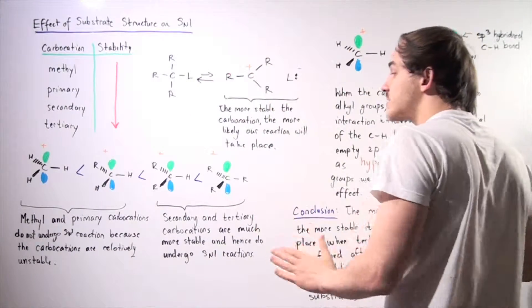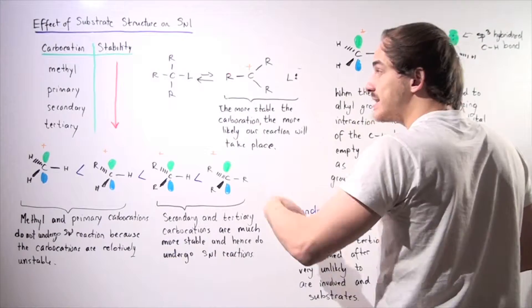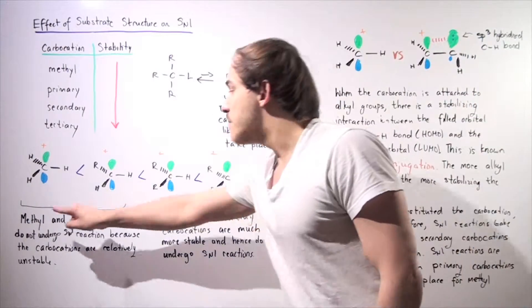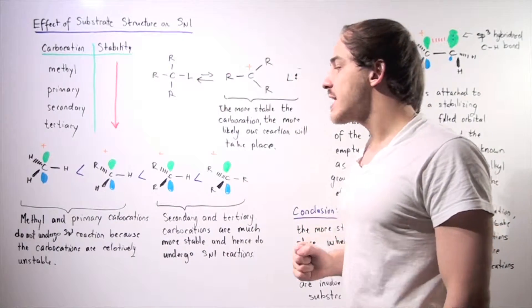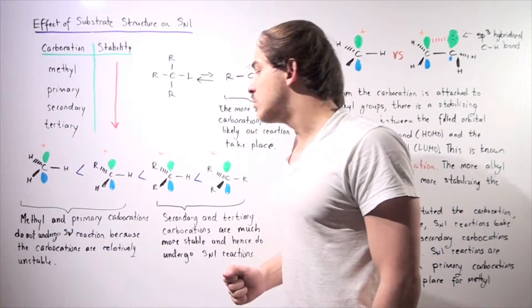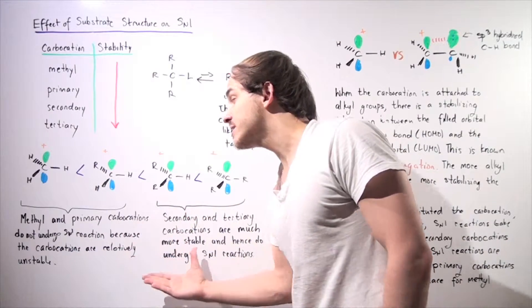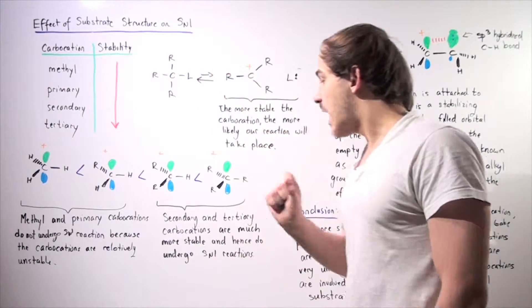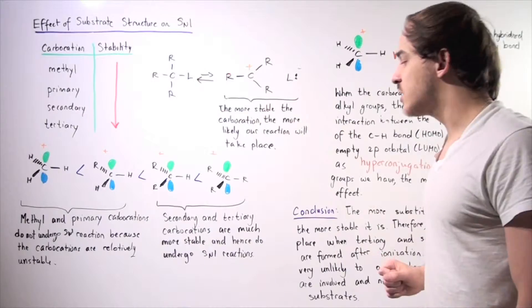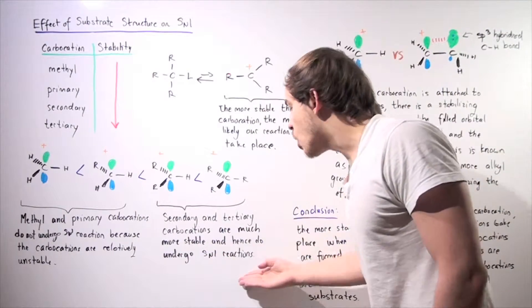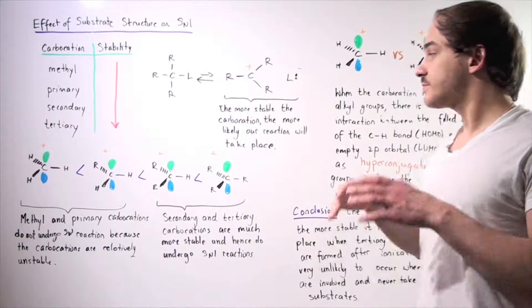Why? Well, because our product intermediate carbocation is much more stable. In fact, methyl and primary carbocations do not undergo SN1 reactions because the carbocations are relatively unstable. Likewise, secondary and tertiary carbocations are much more stable and hence undergo SN1 reactions.